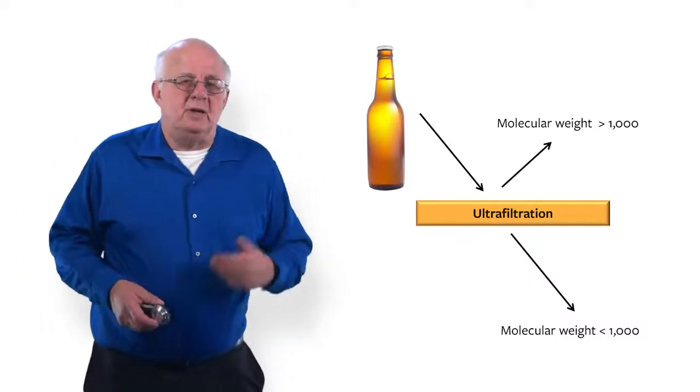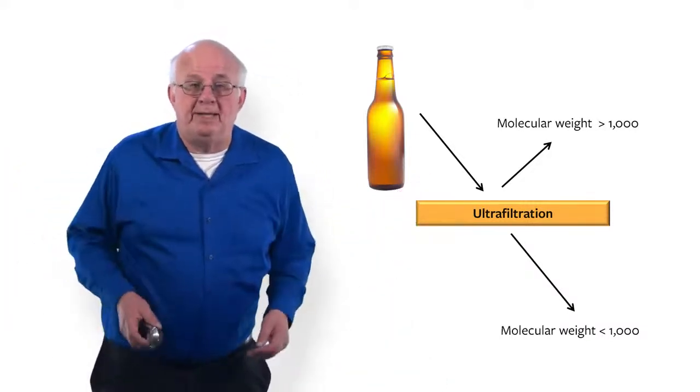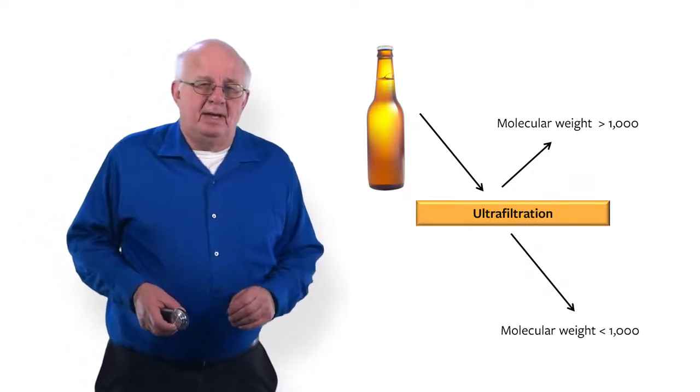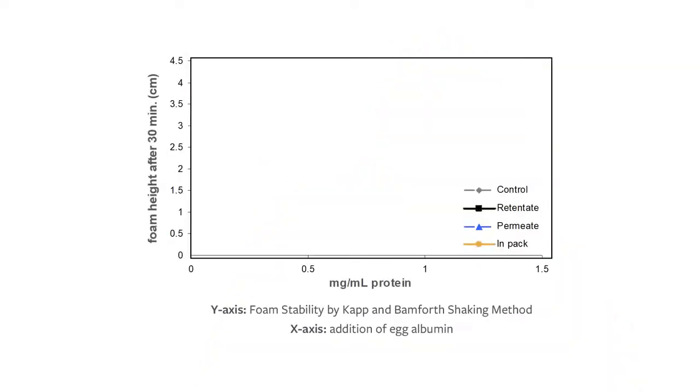And what you do then is to add back protein. And the protein that I like to use is egg white. I've got a patent on putting egg white into beer. I don't recommend it. People are allergic to eggs, so don't do it. But this is a model protein solution that you can use in this test. So your ultrafiltration removes the high molecular weight material. And then you can measure the foam stability using the shake test that I've referred to several times in this course. Now, let me talk you through one example, which you can see in front of you. So on the y-axis, we have the foam stability by the shaking technique. And then on the x-axis, we have increasing amounts of egg protein, egg albumin.